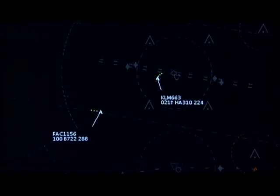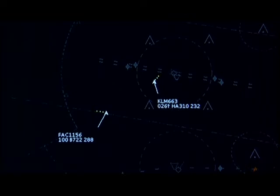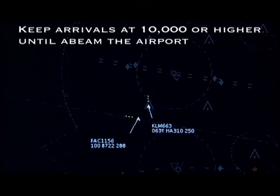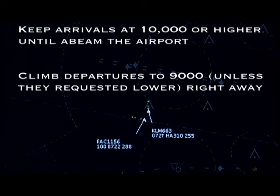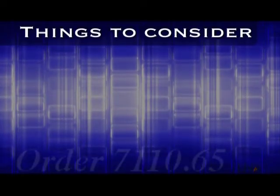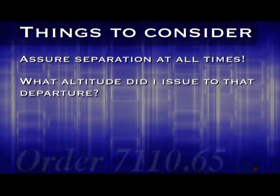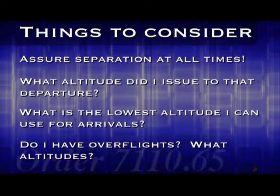Here is a very common situation involving departures from Academy Airport. Aircraft departing from Academy will automatically climb to 5,000 per the departure procedures. You might think that because of this, you can descend arrivals to 6,000 when they turn on to the downwind. But aircraft are more fuel efficient and can go faster at higher altitudes. So as a general rule, it's best not to descend them below 10,000 until they are abeam the airport. Also, you want to get departures climbing and on their way to the gate as quickly as possible. So the rule of thumb is to keep aircraft on the downwind at 10,000 or higher and have departures climb to 9,000 until they are past any aircraft on the downwind course. This assures separation between departures and arrivals. Exercise good judgment and assure separation at all times. The key is to think ahead: what altitude did I just issue to that departure, and consequently, what is the lowest altitude I can use for arrivals? Do I have any overflights and what altitudes are they at? How will that affect the altitudes I can use for other traffic?